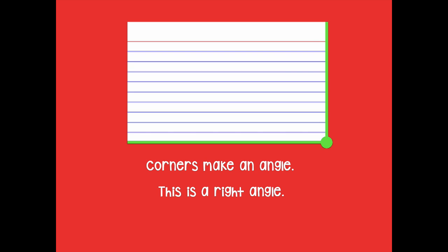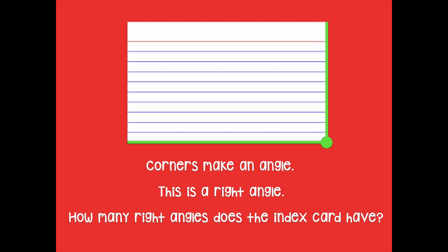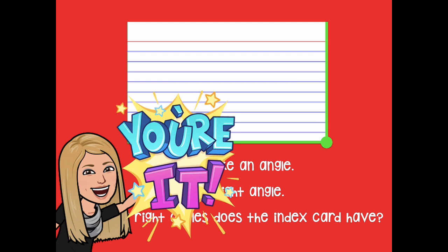So here we're going to start with our index card. We're going to use this as a tool today — our right angle tool is what we're going to call it. You'll actually be able to use these in lessons that are coming up, so make sure you save your index card or sticky note. When we go down the sides of something and meet in the corner where that green dot is, that's a corner. Corners make an angle. This is a right angle. How many right angles does the index card have? Pause the video, take a look at those corners, and click play when you're ready.